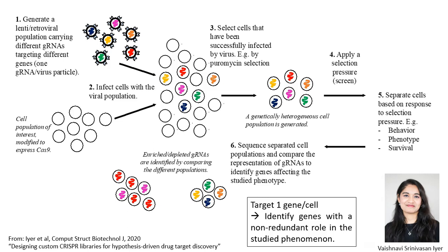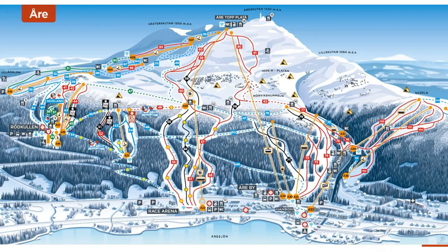Targeting one gene per cell means we can target a lot of genes in a fairly small cell population. However, a caveat is that we can only identify genes that have a non-redundant role in the studied phenomenon. What do I mean by that? Well, here I come to the ski resort.